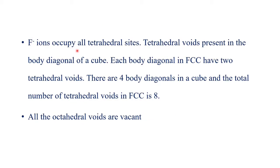Fluoride ions occupy the voids. Two types of voids exist in a cubic lattice: tetrahedral sites and octahedral voids. For an FCC arrangement, the total number of atoms per unit cell is 4 — calculated as 8×(1/8) + 6×(1/2) = 4. If n is the number of atoms per unit cell, then there are 2n tetrahedral voids and n octahedral voids.